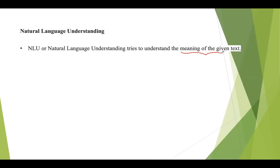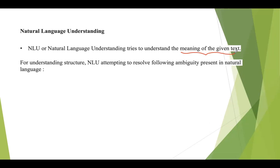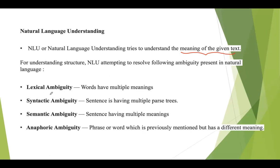NLU must be performed before natural language generation, since the system must first understand before generating text. The nature and structure of each word inside the text must be known for natural language understanding. Whenever a sentence is given, this process must understand the nature and structure of every word present in that sentence. Natural language understanding mainly attempts to resolve ambiguity present in the language, and different kinds of ambiguities will be explained in detail in further upcoming lectures.